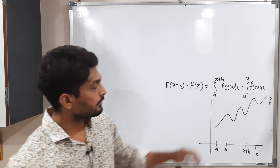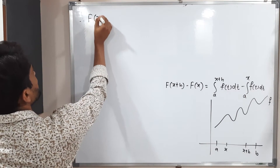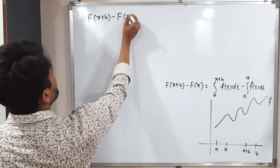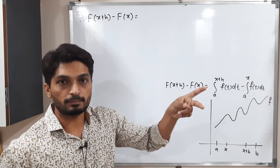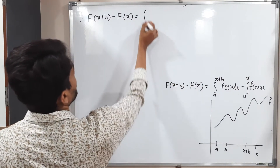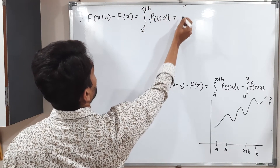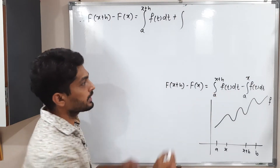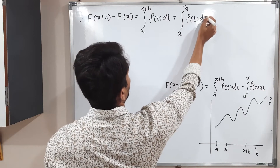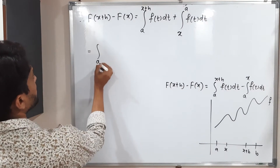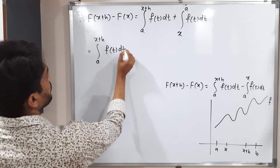Continuing, F(x + h) − F(x) = ∫ₐˣ⁺ʰ f(t) dt + ∫ₓᵃ f(t) dt. Because of the minus sign, we change the limits: the second integral becomes ∫ₓᵃ f(t) dt.